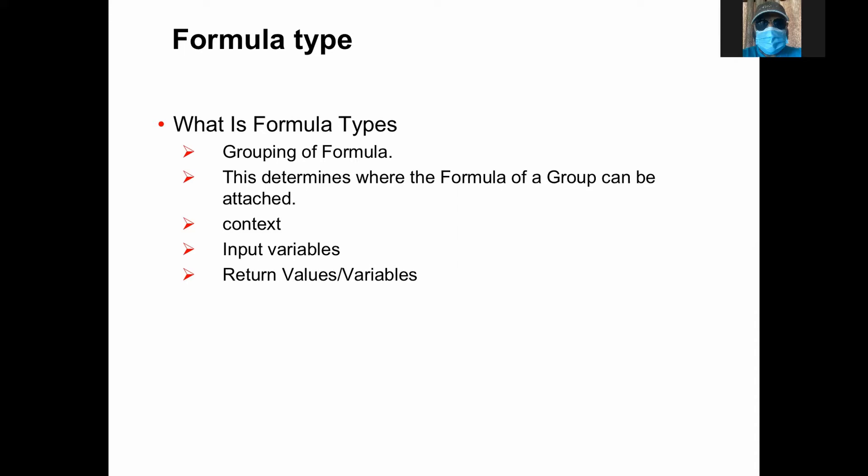Formula type is a category or a group of formulas, and it also determines where it's supposed to be used — in a field that selects a formula from a particular formula type. The contexts are defined along with the formula when the formula is created. So when we know the formula type, we also know what possible contexts can be passed from the formula. We also know from the document what input variables come from a formula type for a particular column. When it comes to input variables, if a formula type is used in different places or different fields, there's a possibility the input variable may differ.